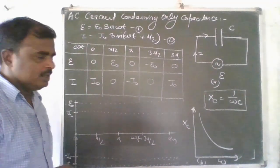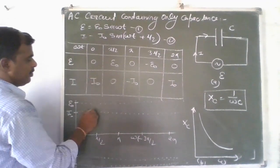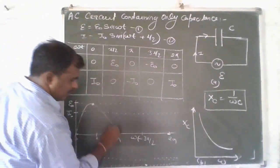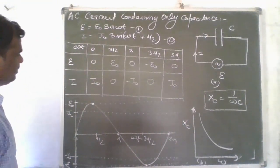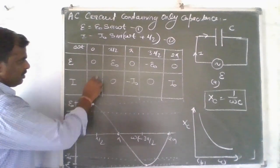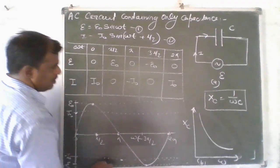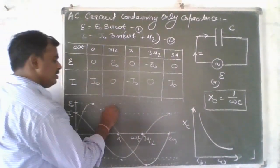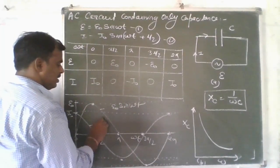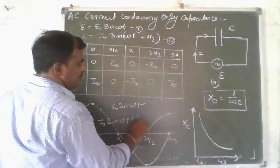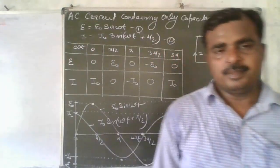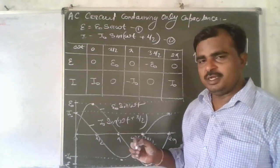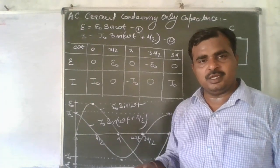First we plot the graph of alternating EMF, then the current I₀ sin(omega t plus pi by 2), showing that current leads EMF. This demonstrates what happens in different types of questions where you plot the variation of alternating EMF or alternating current for a capacitor circuit, an inductor circuit, or a circuit containing only resistance.